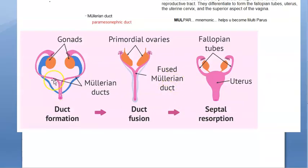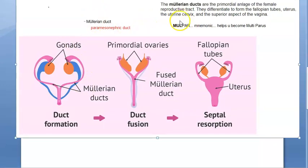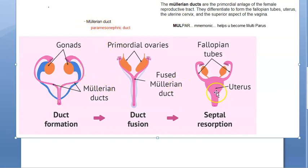So you have understood this diagram. The pink structures shown are the Mullerian duct. 'Mulpar' is our mnemonic to remember: if a woman wants to become multiparous, the Mullerian duct or paramesonephric duct has to develop.